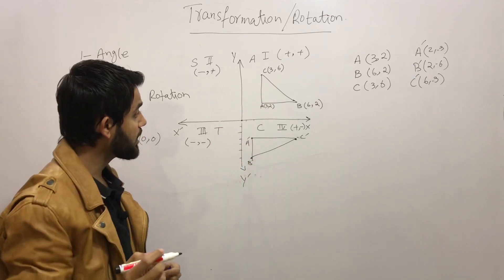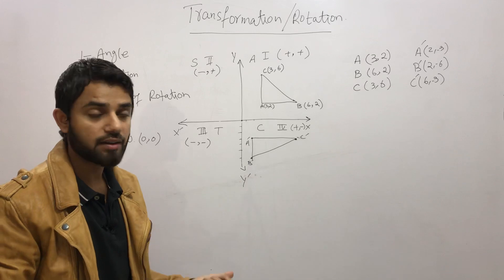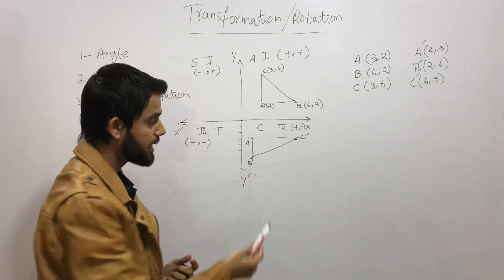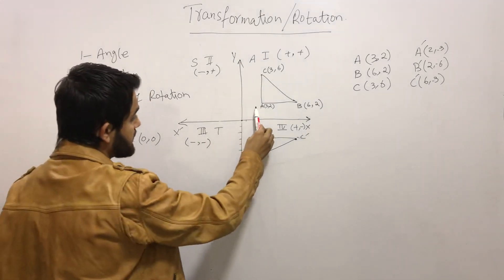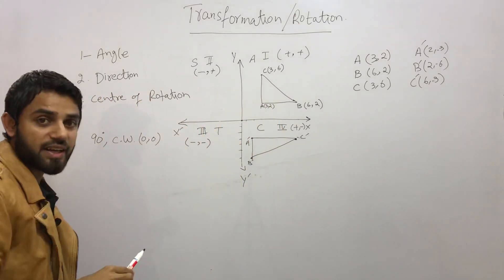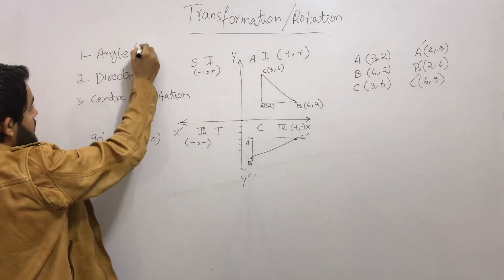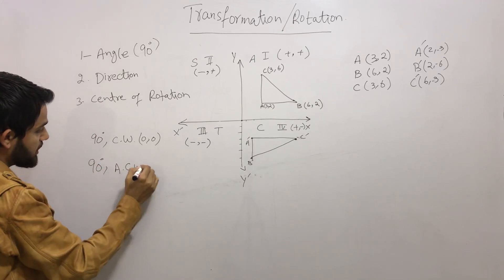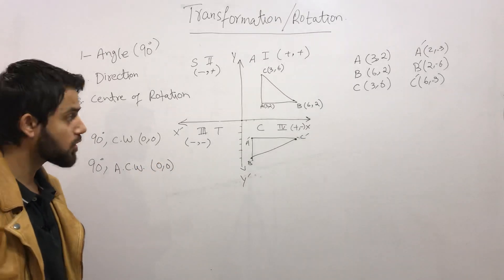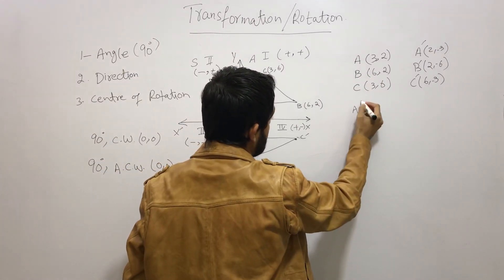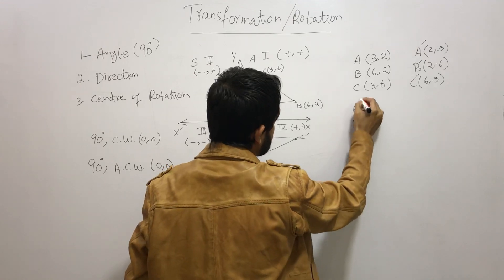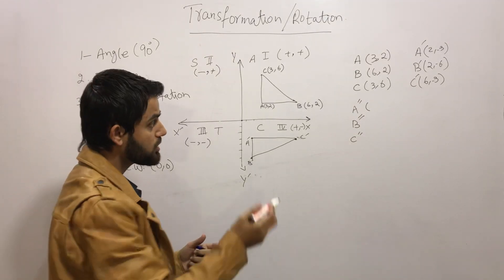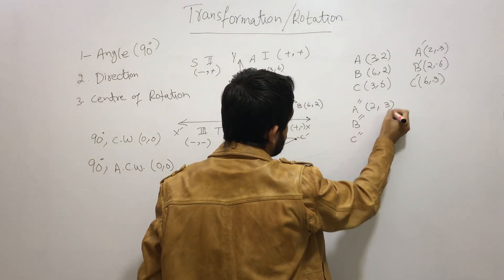Now I want to move the same triangle ABC in the anti-clockwise direction by 90 degrees, keeping the center at (0, 0). We will use the same formula. For A double prime, B double prime, and C double prime — when rotating 90 degrees, switch the X and Y values: A becomes (2, 3), B becomes (2, 6), C becomes (6, 3).